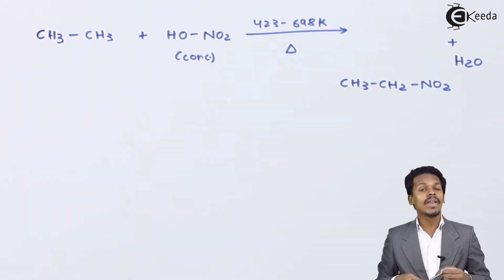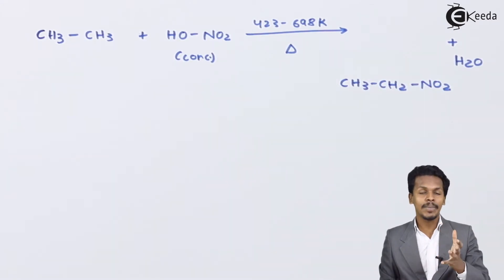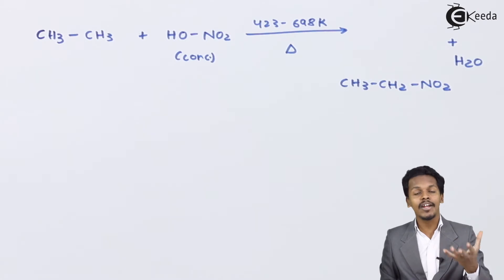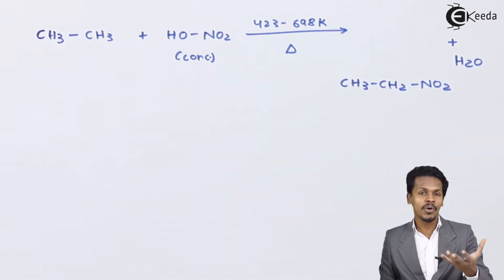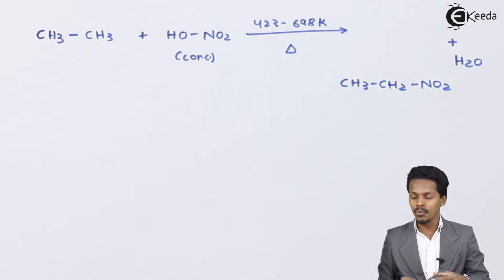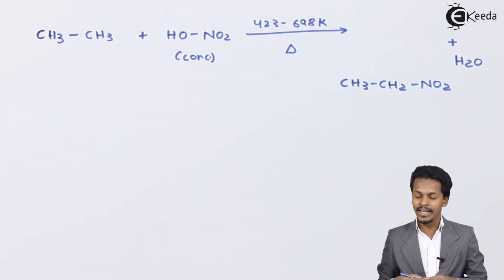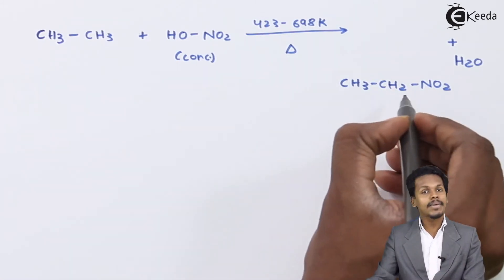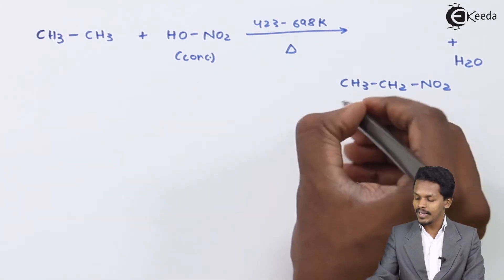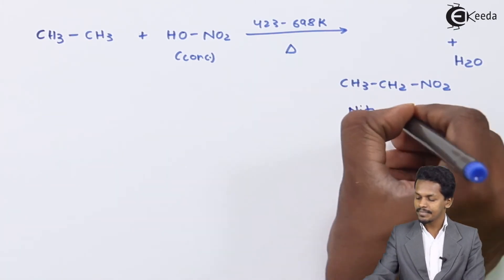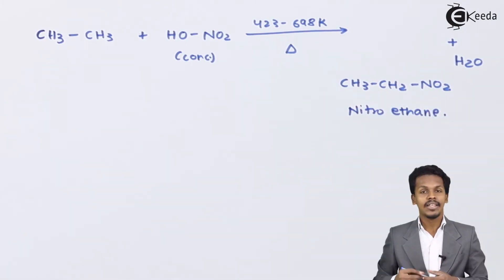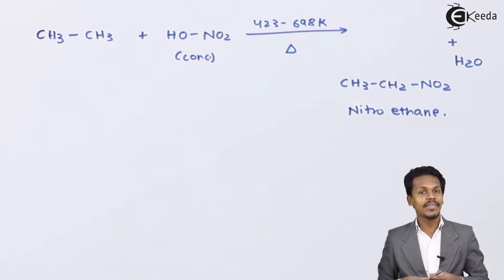This is known as the nitration process, where we have replaced one hydrogen — or we can also replace more than one hydrogen — of an alkane with the corresponding number of NO2 groups, and that is how we obtain the nitroalkane. The name of the product obtained here is nitroethane.